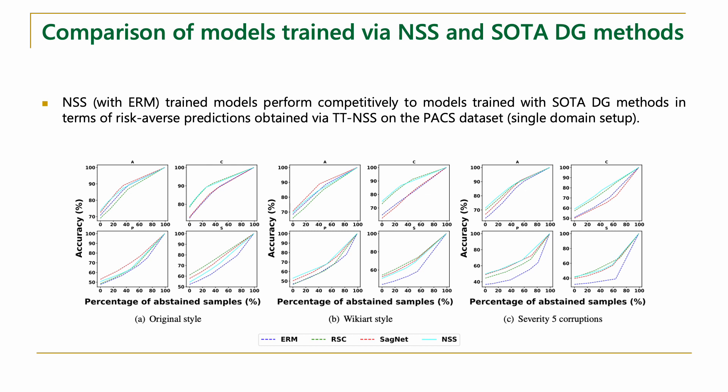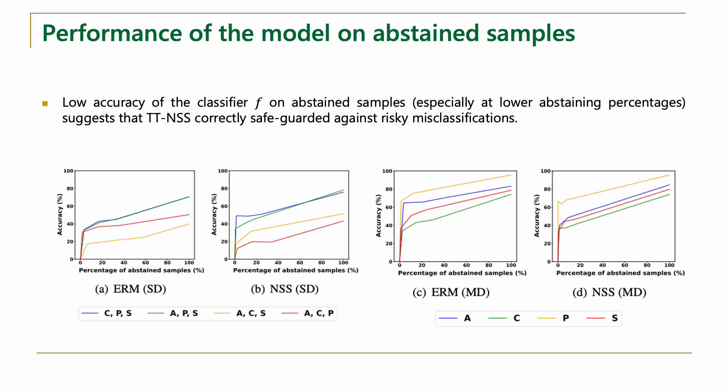Moreover, models trained with neural style smoothing in addition to ERM-based losses produce better risk-averse predictions, as observed in the table where we present area under the curve of accuracy versus percentage of abstained samples. Combining neural style smoothing losses with ERM yields models that perform competitively with state-of-the-art DG methods such as SACnet and RSC. Augmenting neural style smoothing losses with these state-of-the-art DG methods can further boost the quality of risk-averse predictions. The figures also show low accuracy on abstained samples, implying that our inference procedure correctly abstained on ambiguous samples at lower abstaining rates and safeguarded the model against risky misclassifications.